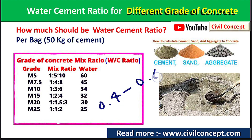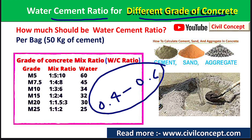The water-cement ratio generally ranges from 0.4 to 0.6. Please like this video and subscribe to my channel for new updates about civil engineering.